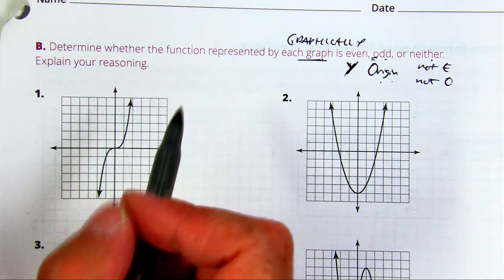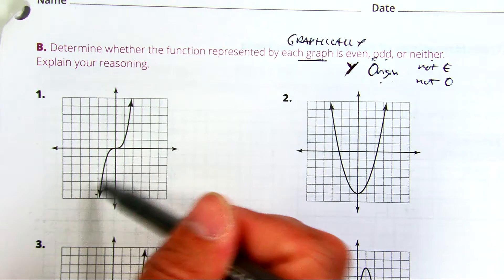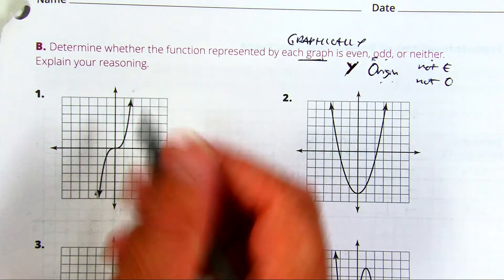Question 1b, I noticed I have an odd degree function. One starts down, one ends up, just like x to the first.